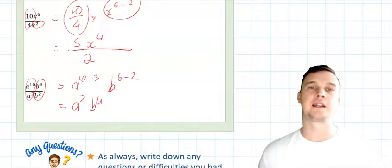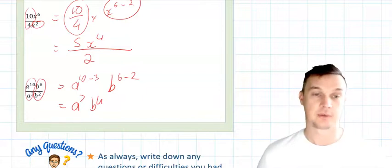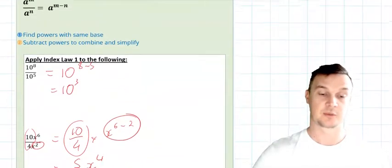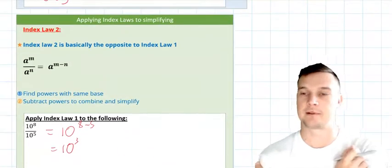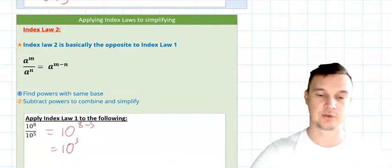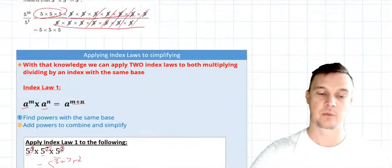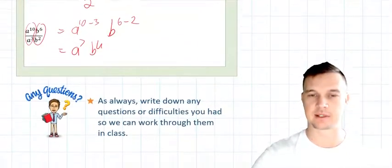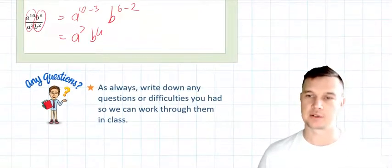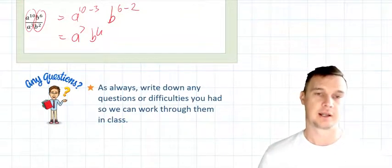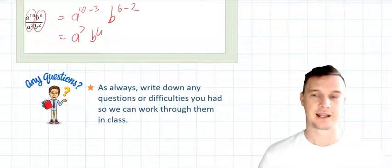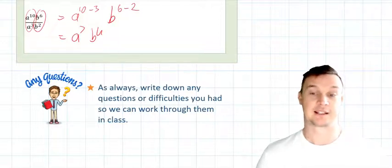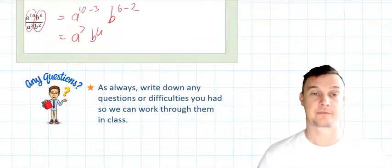So index law 1 and index law 2, we just apply those processes. So we're subtracting our powers when we're doing index law 2, and we are adding our powers when we're applying index law 1. If you have any questions or none of that makes sense, please make sure you write them down and bring them into class so we can go over them in a bit more detail. But as we go through, we should be able to add a bit more expansion on top of these topics. Thanks guys.